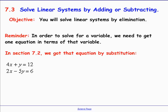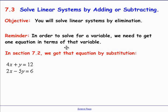In section 7.3, called 'Solve Linear System by Adding and Subtracting,' we're going to learn a new method besides substitution for solving a system of linear equations. Just like in substitution, we're going to have the same goal. In order to solve for a variable, we need to get one equation — one equation in terms of one variable.